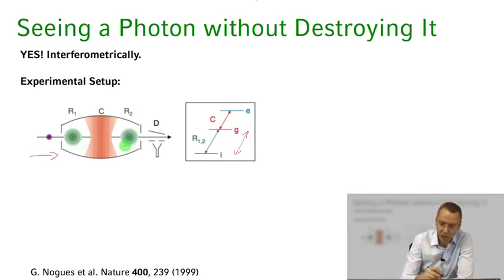So these Ramsey zones, R1 and R2, they just act on the IG transition and the cavity acts on the GE transition up here. So this is where the cavity acts.